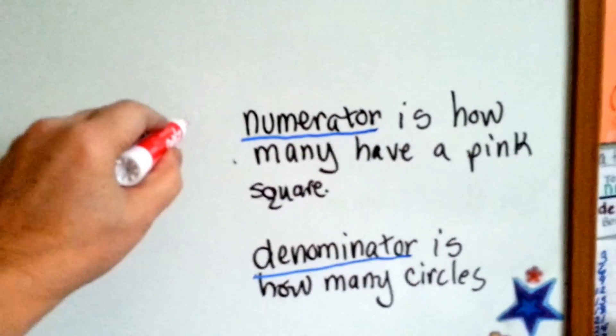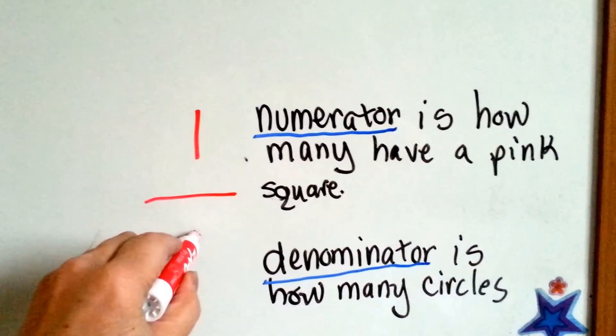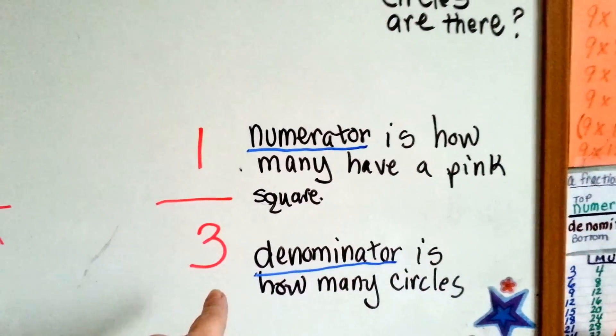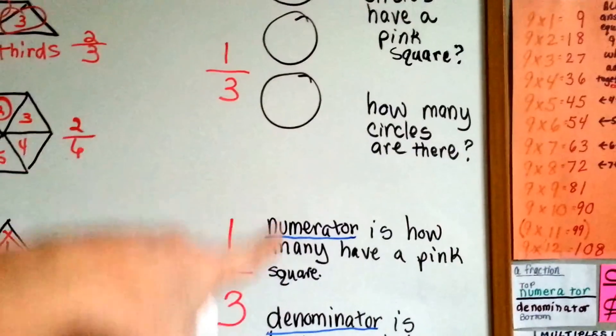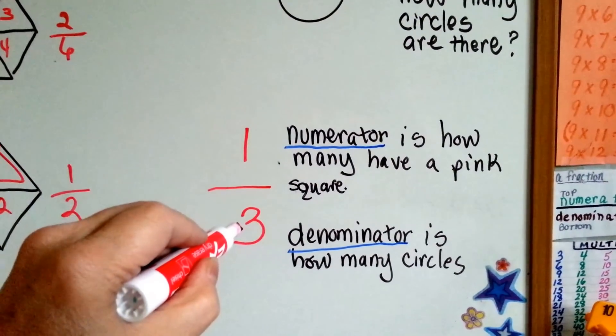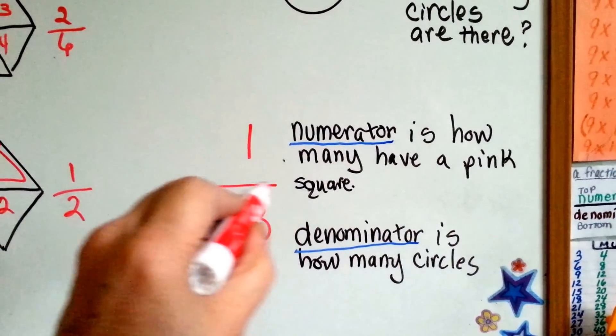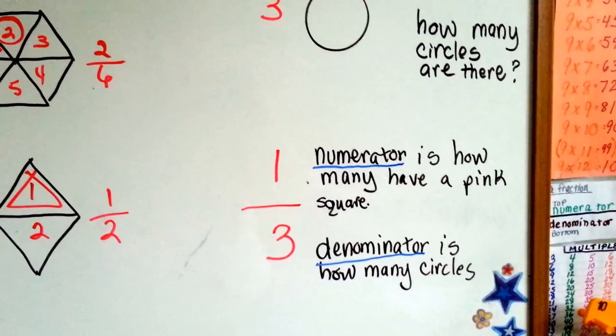The numerator is how many have a pink square. You draw a line. And the denominator is how many circles there are in total. The top is the numerator, and the bottom is the denominator. See that? And this line splits it down the middle, so that you split the numerator from the denominator.